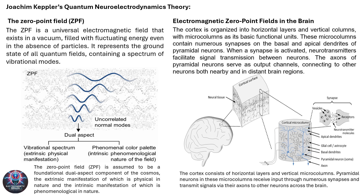Kepler's quantum neuroelectrodynamics theory suggests that the zero-point field, or ZPF, serves as a substrate for electromagnetic consciousness. The ZPF is a dynamic, pervasive field filled with fluctuating energy, even in the absence of particles. The brain is proposed to act as a resonant oscillator, selectively coupling with specific modes of the ZPF, amplifying certain electromagnetic patterns linked to conscious experiences. This illustrates how these interactions with the ZPF allow the brain to access a variety of phenomenal states, implying that consciousness might result from the brain's dynamic modulation of this field, emerging not just from neural circuitry but from a deep resonance with fundamental electromagnetic fields encompassing the intrinsic qualities of the ZPF.